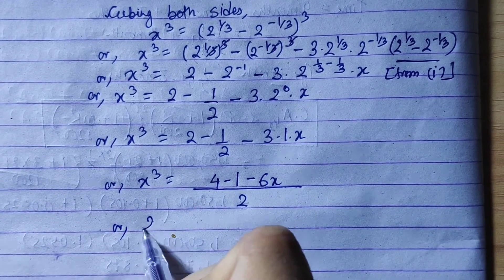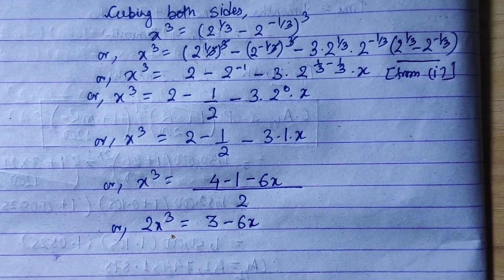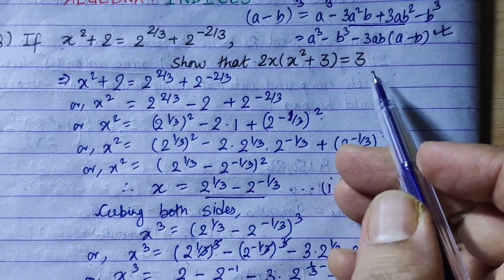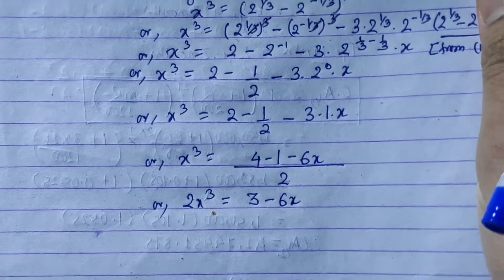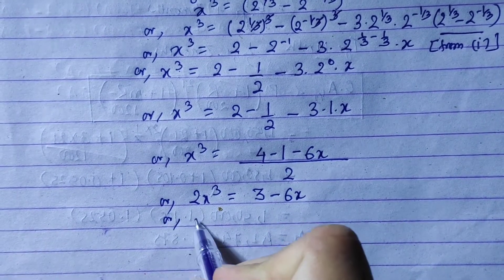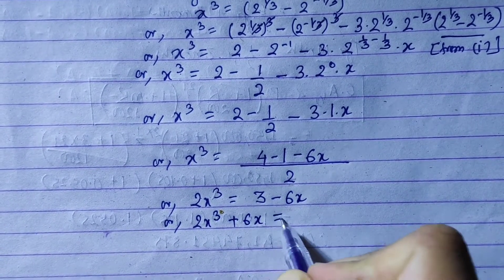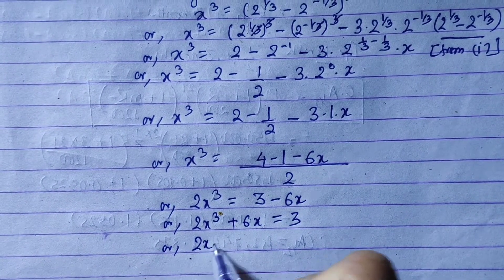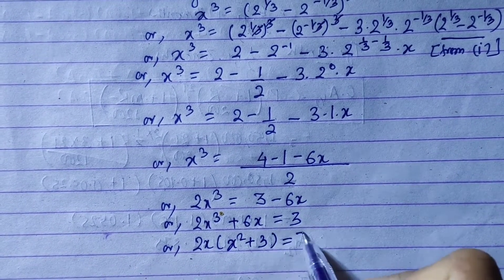So 2x cubed equals the expanded terms minus 6x, and therefore 2x cubed plus 6x equals 3. Taking common factor 2x out gives 2x bracket x squared plus 3 bracket equals 3, which is the left-hand side. Thus 2x cubed plus 6x is equal to 3, proved.